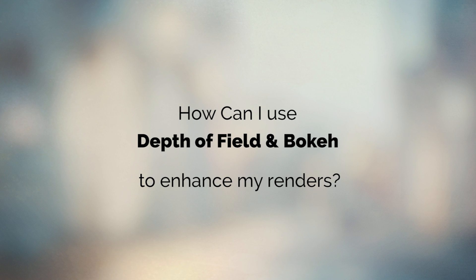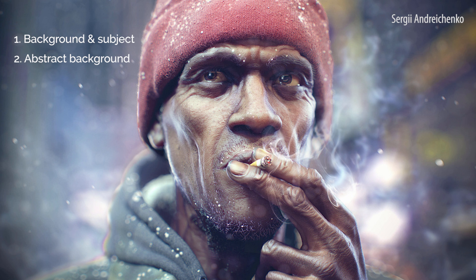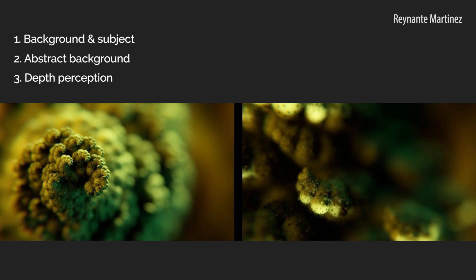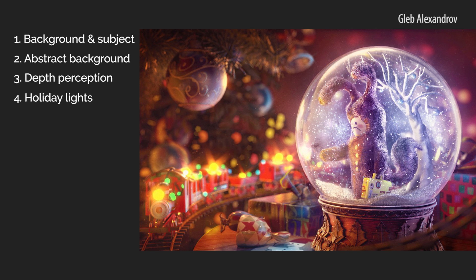And how can I use this bokeh in my renders? Let's look at some examples. First of all, you can use bokeh and depth of field to separate the subject from the background. And as a side effect of this separation you achieve an abstract background. Also, bokeh can be used to enhance the depth impression. This effect gives another clue to the viewer of the 3D space of the image.